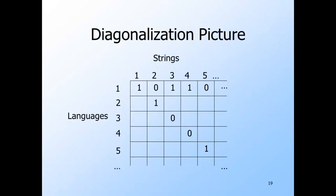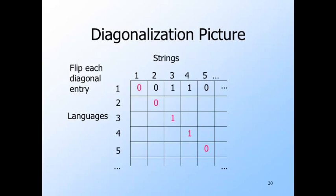The reason should be apparent from this picture. Imagine an infinite matrix in which the rows correspond to languages and the columns to binary strings. A one in the entry for row i and column j means that the j-th string is in the i-th language; zero means it is not. If we could enumerate languages, we could create such a table. Look at the entries along the diagonal and complement each one — replace zero by one and vice versa. The complemented diagonal, rotated 45 degrees, looks like a language, telling which strings are its members. But this language cannot be any row, because it disagrees with each row in at least one position — specifically, with the i-th row in the i-th position.